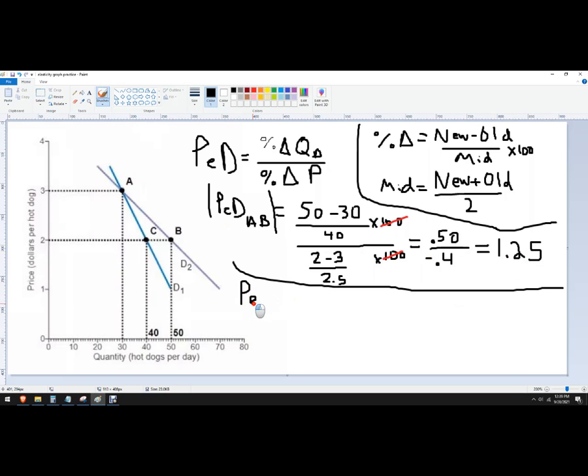Let's do the other one, price elasticity of demand going from A to C. Now this one, we're also, the price change is the same. So I can just divide by 0.4 right here. And I need to, this time I'm going from 30 to 40.